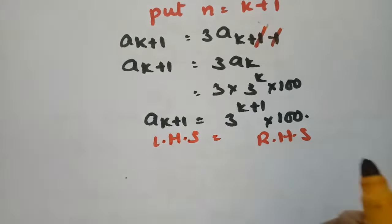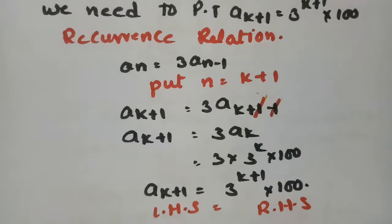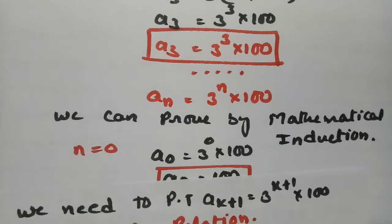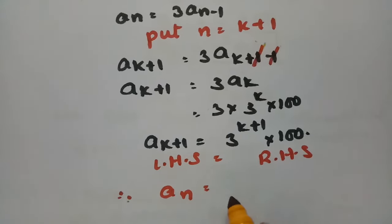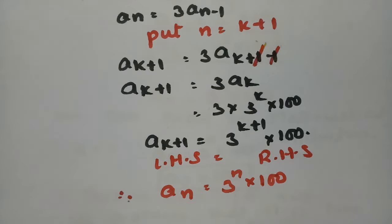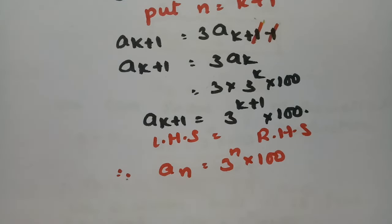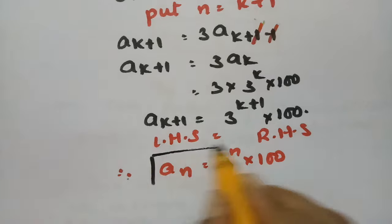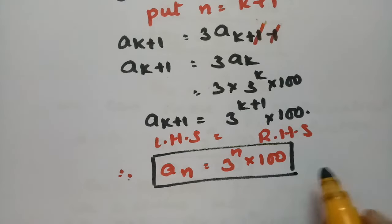Therefore AN equals 3 to the power N into 100. By the principle of mathematical induction it is true for all positive integers. Therefore this is the explicit formula: An equals 3 to the power n into 100.